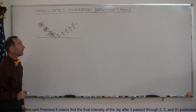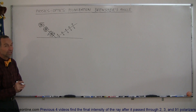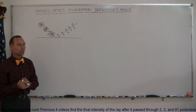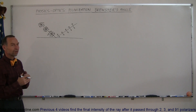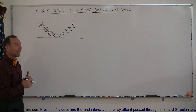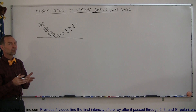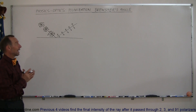Welcome to iLecture Online. Here is the last part of the topic: polarization. In this case we discover that there's a very interesting way in which light can be polarized, and that light is associated with something called Brewster's angle.